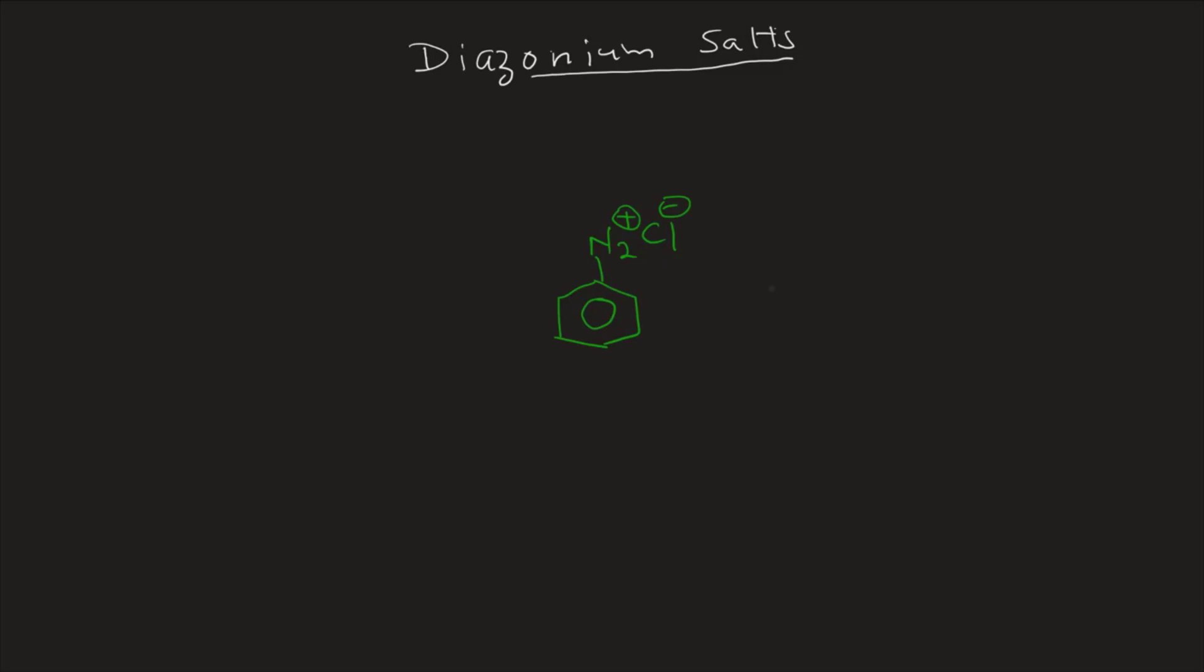So diazo means two nitrogens and it's a plus with the two nitrogens attached to a benzene and the Cl minus is just a spectator ion there. Now what's the beauty of this ion is you can remove N2 gas and then you can make different types of things.